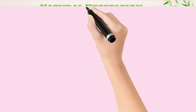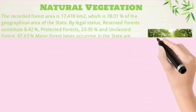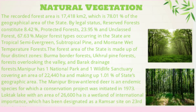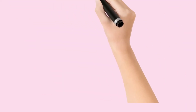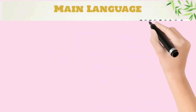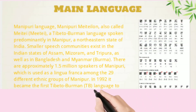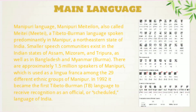Natural vegetation covers an area of about 78% of the state. Manipuri is the main language spoken in Manipur.